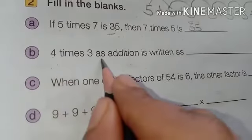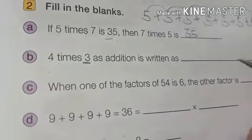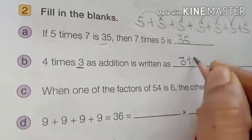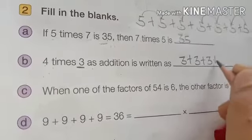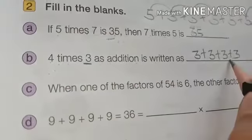4 times 3 as addition is written as, means how many times we have to write 3? 4 times. 1, 2, 3, 4. 4 times 3 in addition is written as like this.